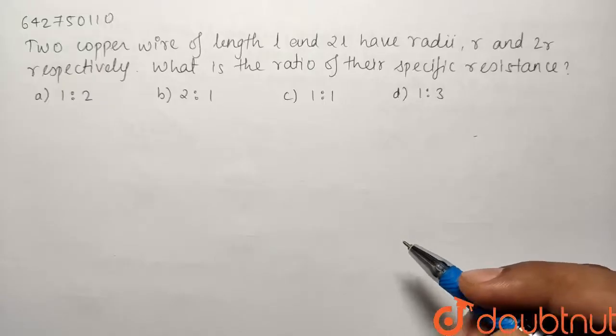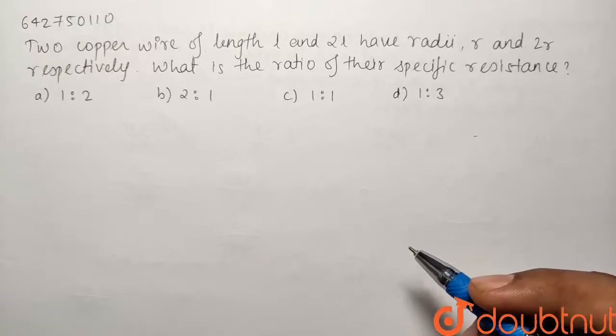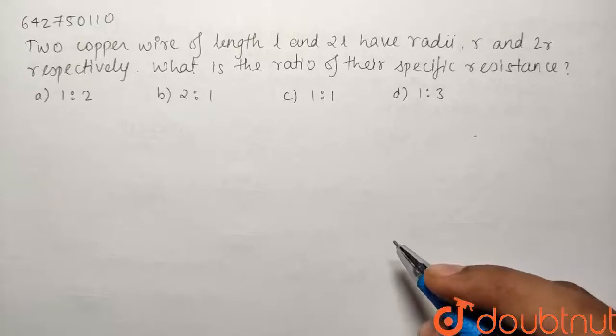So here we have a question from the chapter current electricity. Two copper wires of length L and 2L are having radii R and 2R respectively. What is the ratio of their specific resistance?